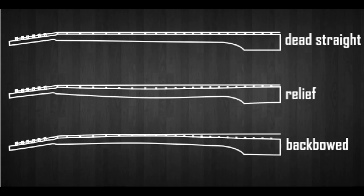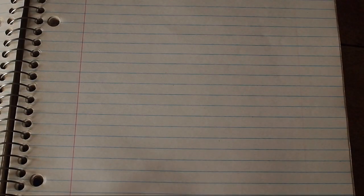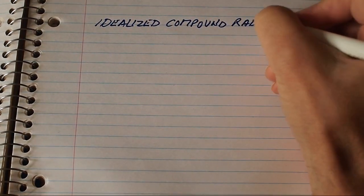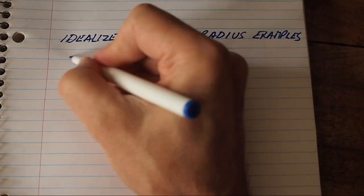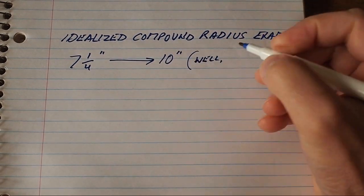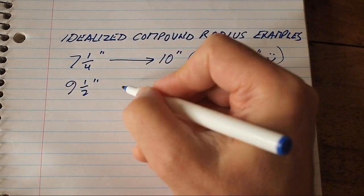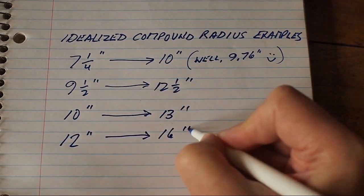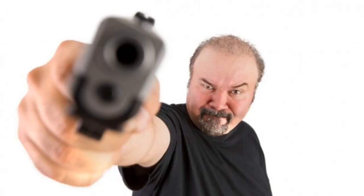So here's a chart of conical, or compound, radii that follow this idea, based on standard string spacings, neck radii, and the nut widths associated with those radii, rounded to the nearest half inch, so your builder doesn't kill you.